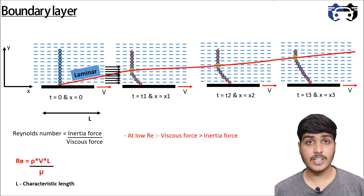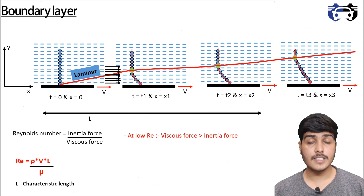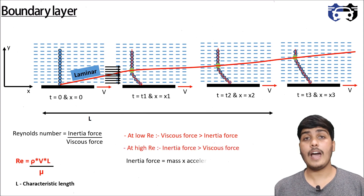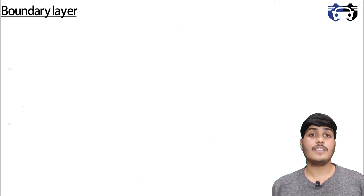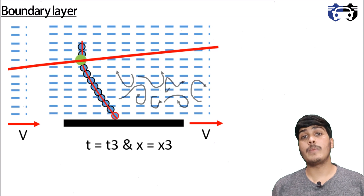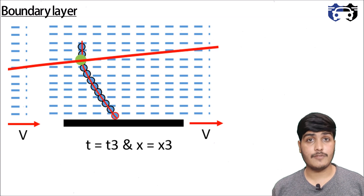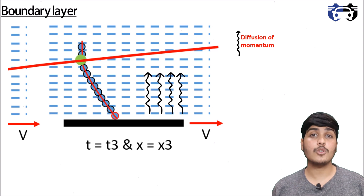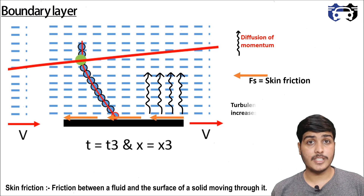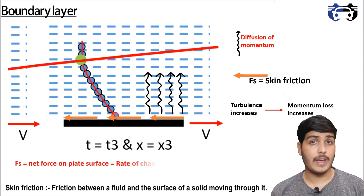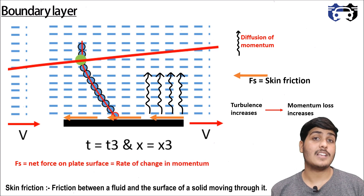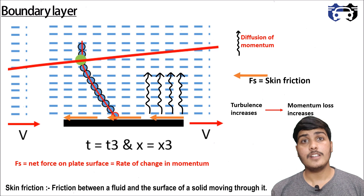As we move further in the x-direction, the Reynolds number increases so that inertia forces dominate, producing unstable flow with fluctuating velocity and turbulence. As velocity fluctuates due to turbulence, the rate of momentum transfer between the surface and the free stream increases, leading to faster growth of the boundary layer and increased skin friction. This happens because increased turbulence means increased momentum loss, and since net force on the surface equals rate of change of momentum, greater momentum loss means greater drag.